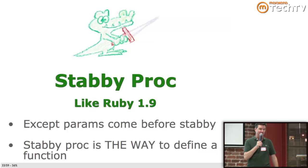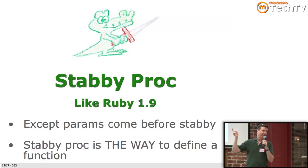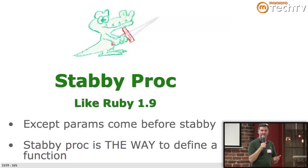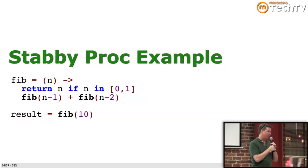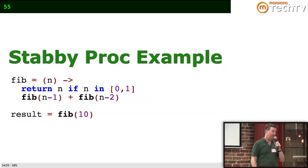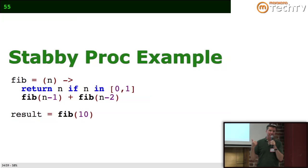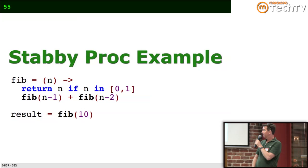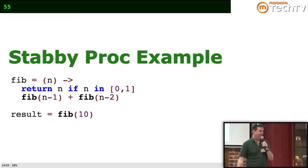The stabby proc is a lot like Ruby 1.9. The parameters come before the stabby, unlike Ruby 1.9. And this is the way to define a function — not just an alternative, this is how you define a function in CoffeeScript. Here's an example with Fibonacci. This is actually executing real CoffeeScript, because I'm not using Keynote or PowerPoint — I'm using Showoff, written by Scott Chacon of GitHub. It'll execute CoffeeScript right there in the presentation.